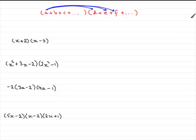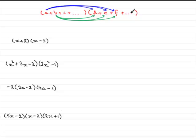Once you've done that you start all over again. But this time you move to the next term in the first bracket, in this case b. And you multiply b with each of the terms in the second bracket. So, you do b times d, b times e, b times f. And if there's another term like c in the first bracket, then what you do is you multiply each term from the second bracket. So, you do c times d, c times e, c times f, and so on.